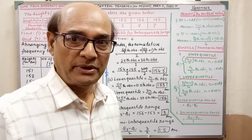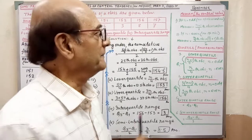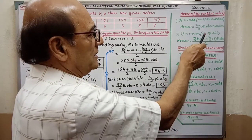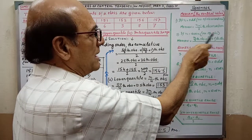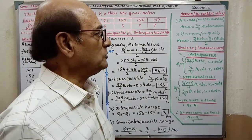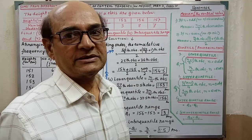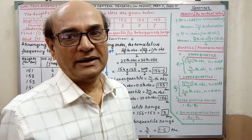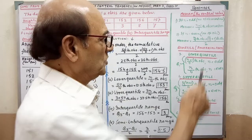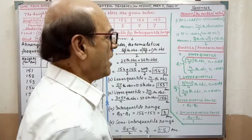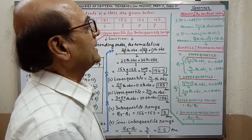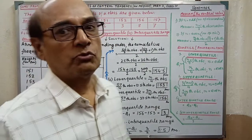If n is even — that is the number of observations is even — then the median equals the (n/2)th observation plus the (n/2 + 1)th observation, divided by 2. This formula you have to remember.